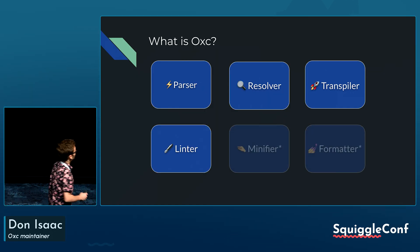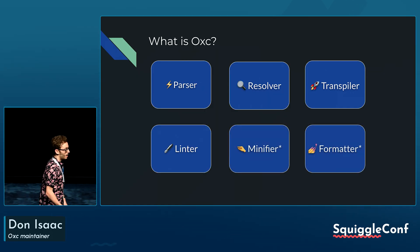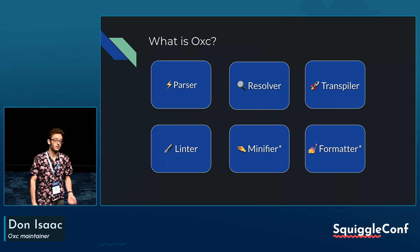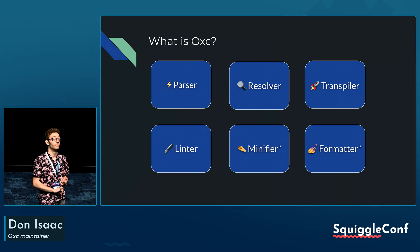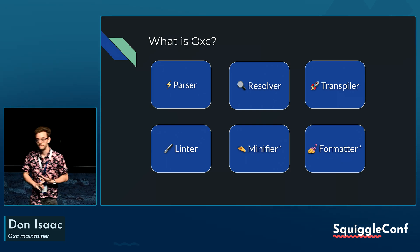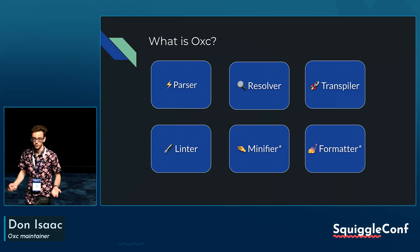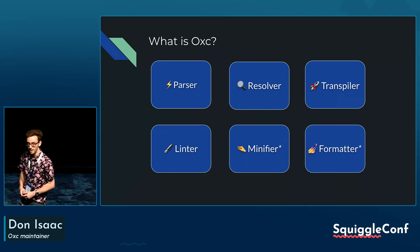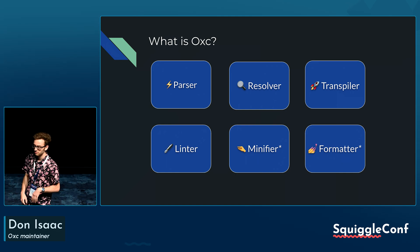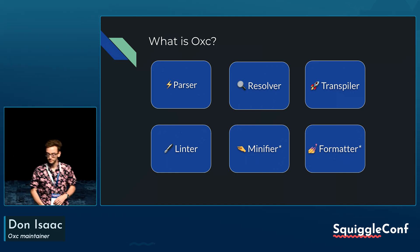We also have a few custom rules that are not available in ESLint or any plugins I've seen. Some things we're still working on are a minifier — taking techniques from Terser and Google's Closure Compiler — and a formatter that is basically trying to be Prettier-compatible, currently at about 40% completion.